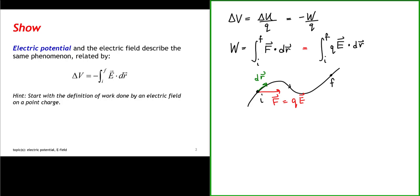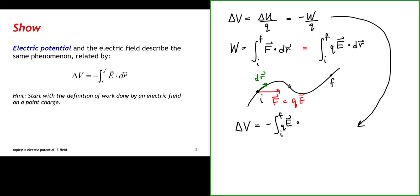Now that we have this relationship for work in the electric field, let's apply that to the change in electric potential. The change in electric potential is minus the work done per unit charge, which means it equals minus the line integral from some initial point to some final point of the charge times the electric field dotted with a displacement differential, divided by the charge. Simplifying, we have now arrived at our relationship between changes in electric potential and the electric field.